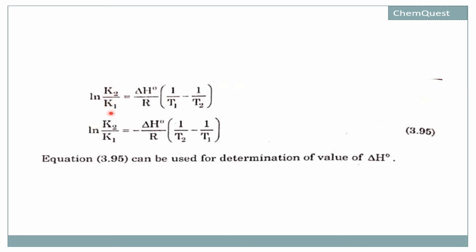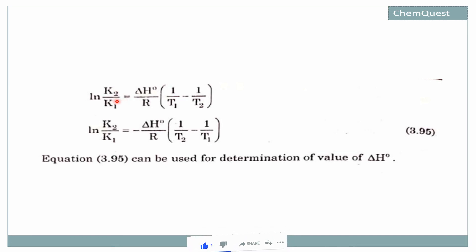We have ln(K2/K1) because ln K2 − ln K1 can be written as ln(K2/K1). This gives: ln(K2/K1) = ΔH°/R × (1/T1 − 1/T2). Multiplying through by −1, this becomes: ln(K2/K1) = −ΔH°/R × (1/T2 − 1/T1). This equation gives the dependence of the equilibrium constant on temperature, and from it we can determine the value of ΔH°.